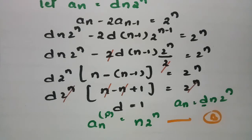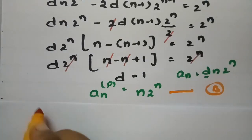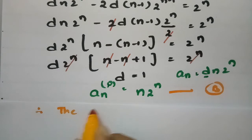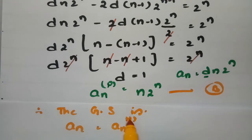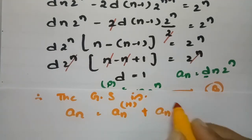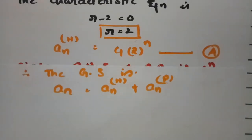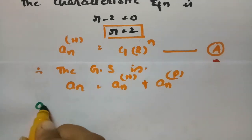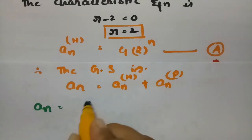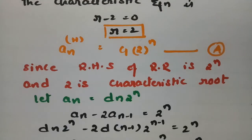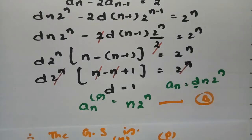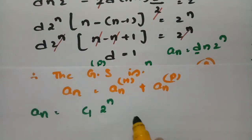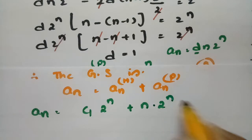The general solution is aₙ = aₙ⁽ʰ⁾ + aₙ⁽ᵖ⁾. Substituting: aₙ = c₁·2ⁿ + n·2ⁿ.